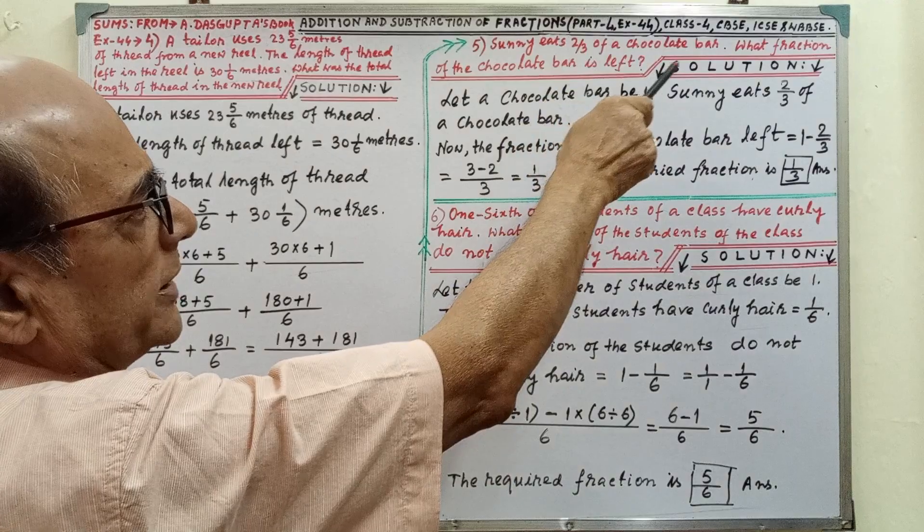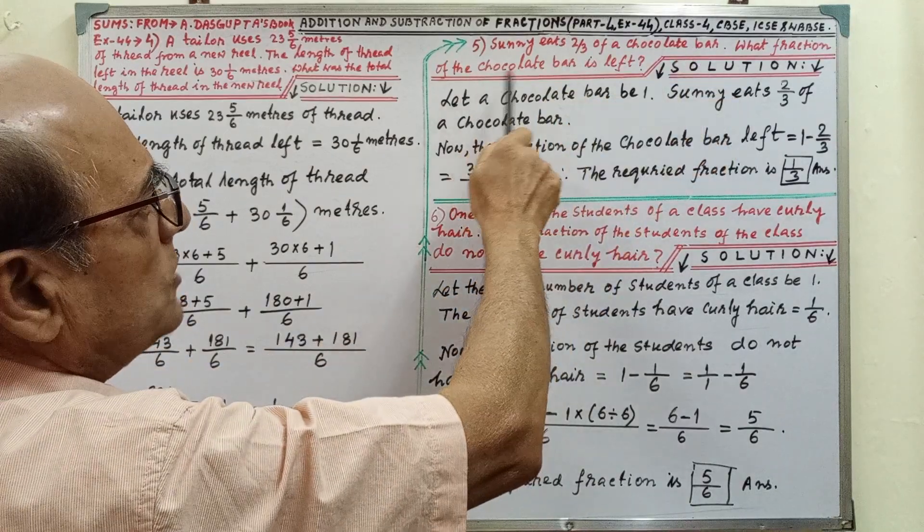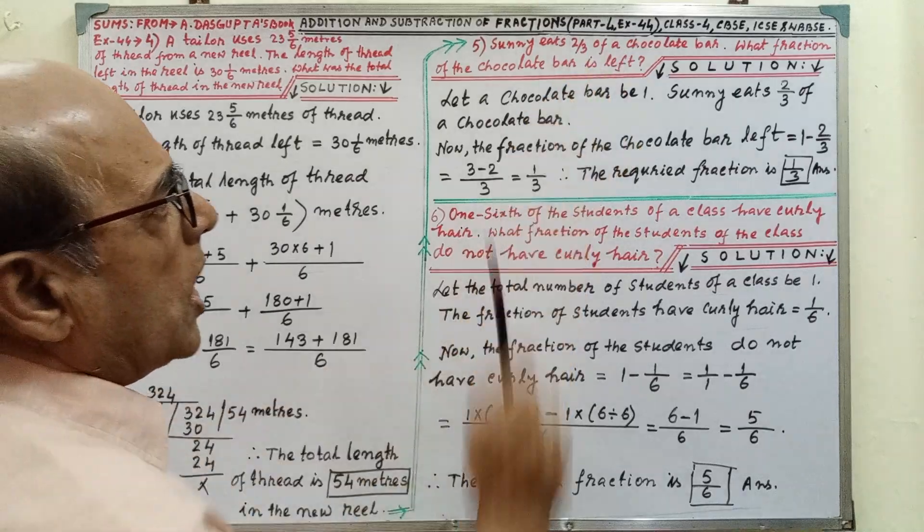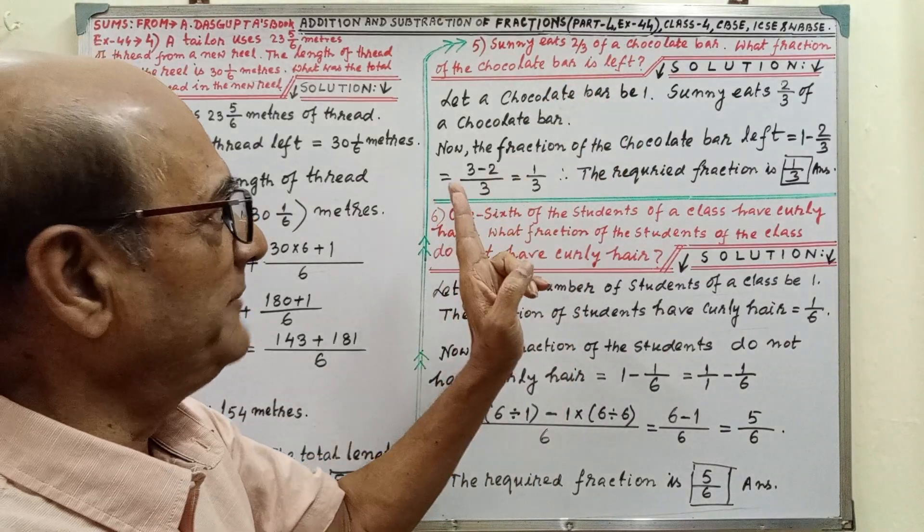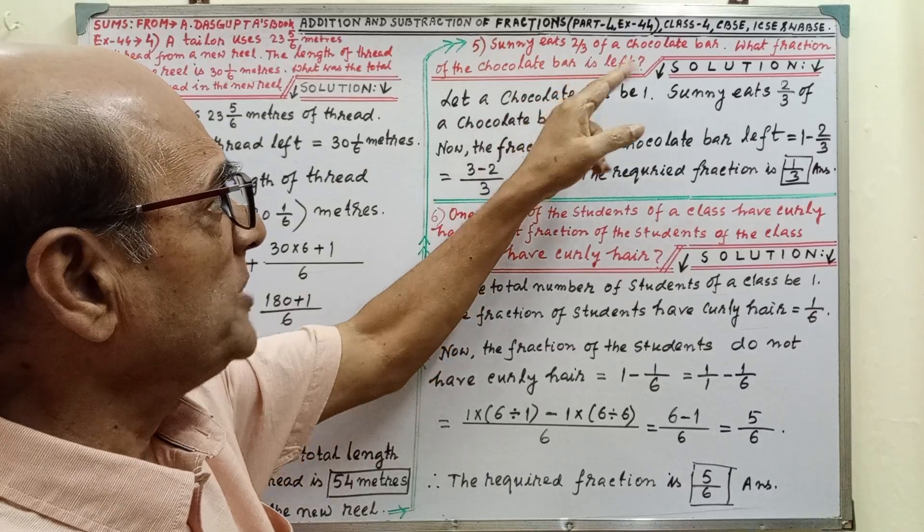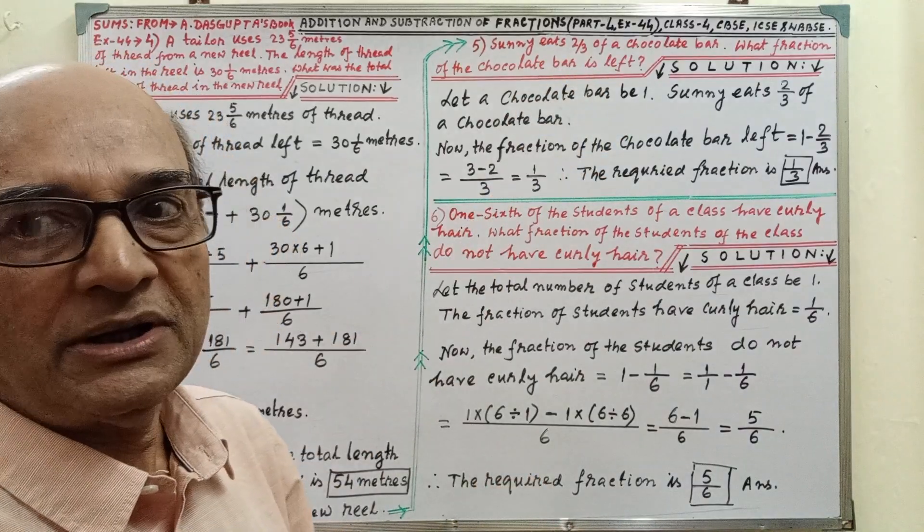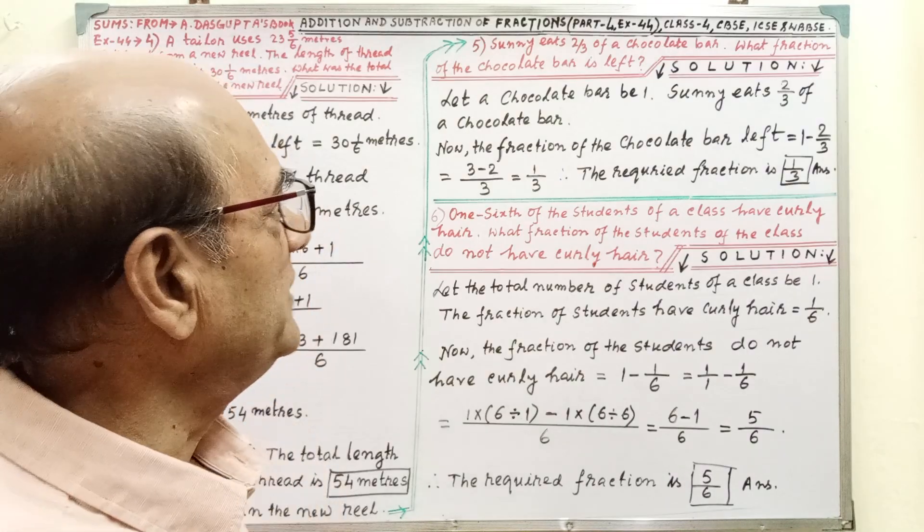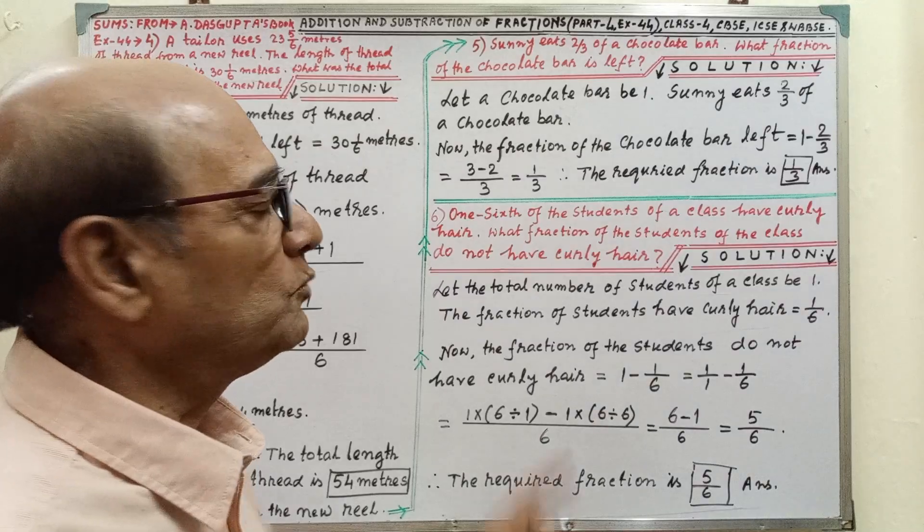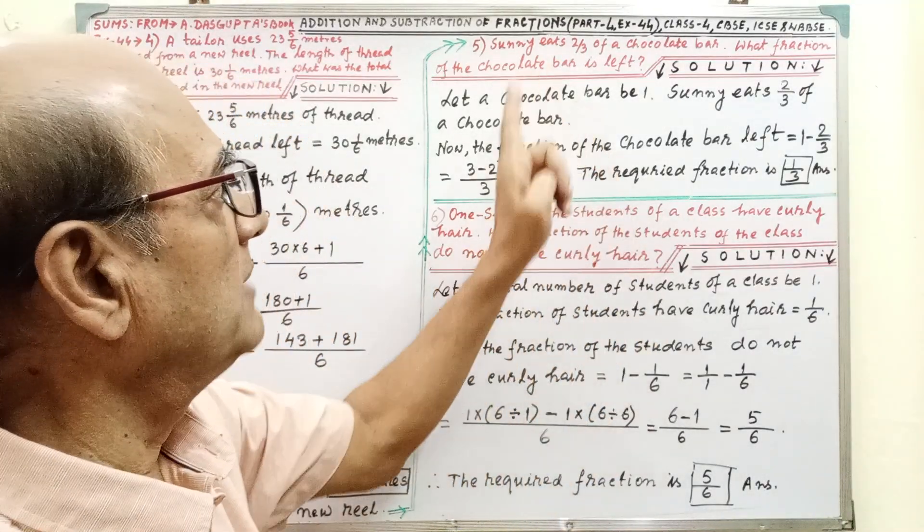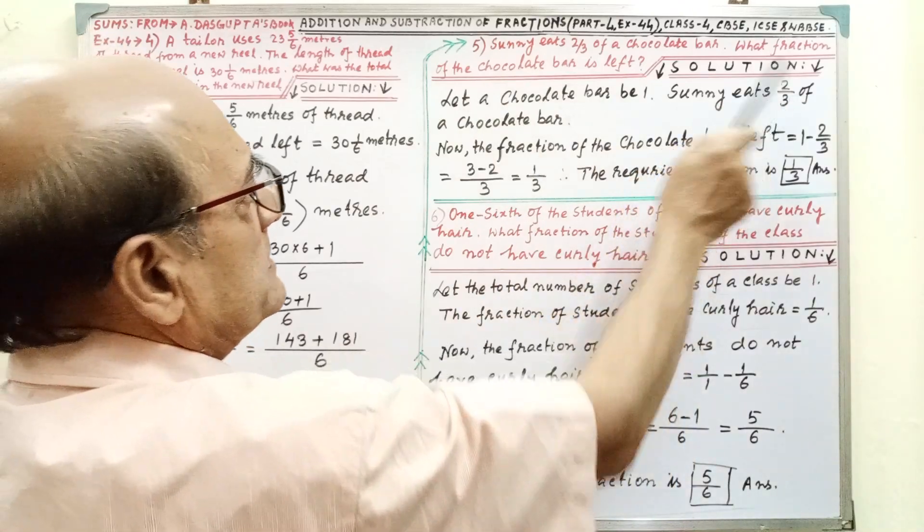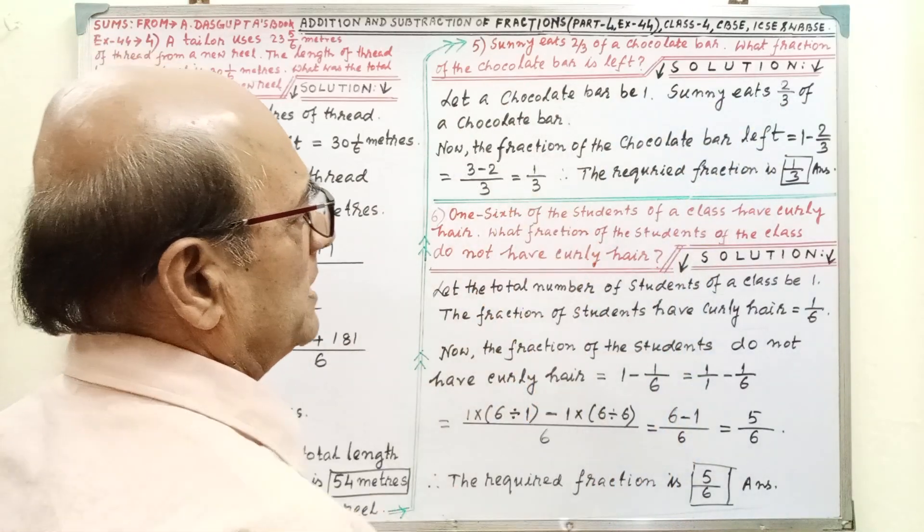Sunny eats this of chocolate bar. What fraction of the chocolate bar is left? This of a chocolate bar. Here, this is the different type. It's this 2 by 3 of a chocolate bar. But total length or bar is not given here. This is why let a chocolate bar be 1. Especially this type of sum, we have to consider 1.